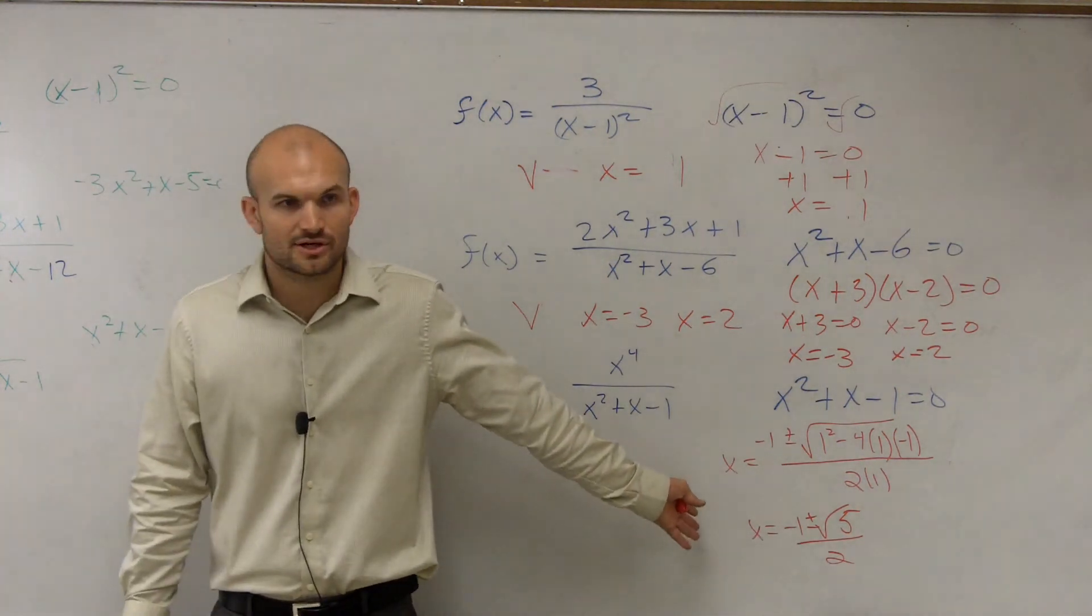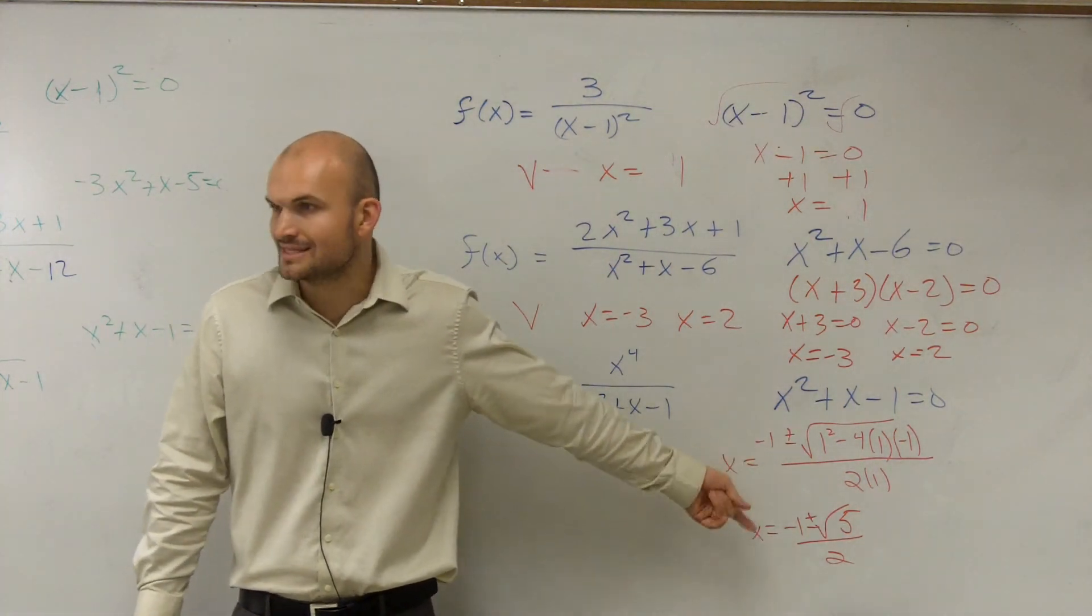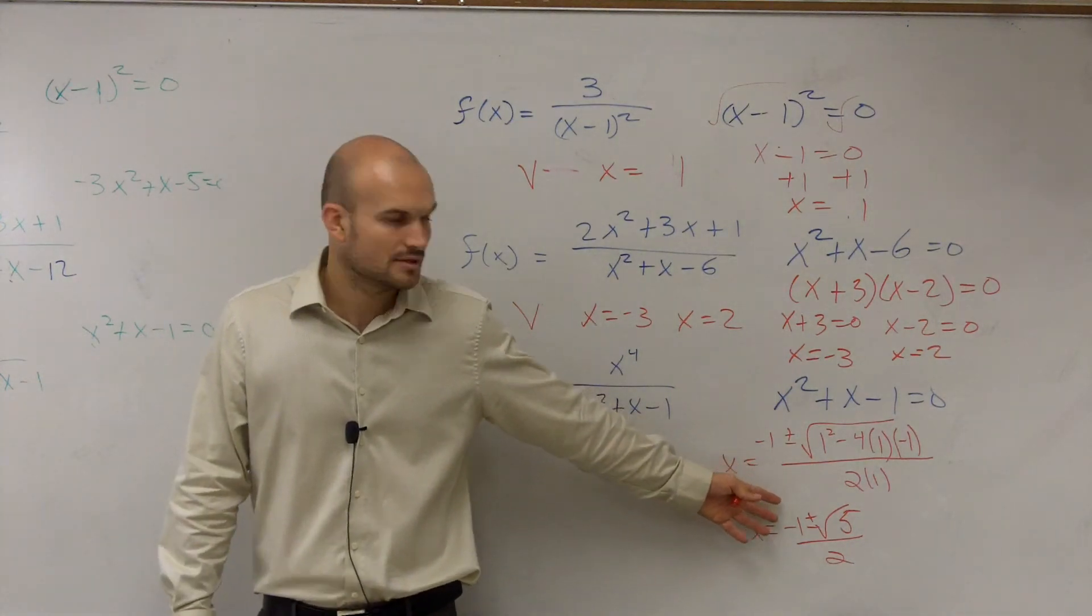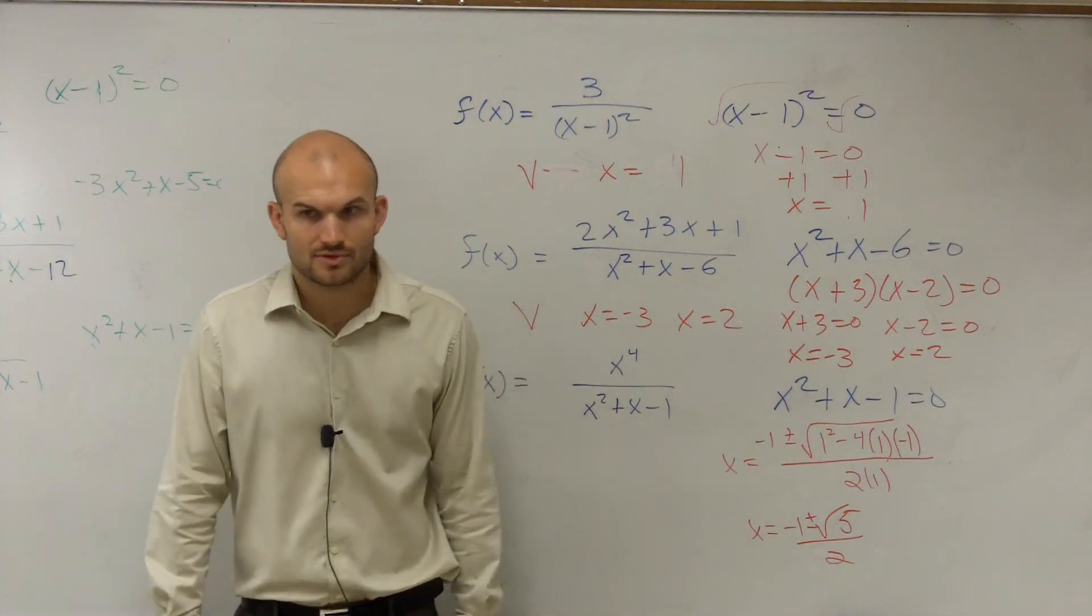So now we just don't have real numbers. They're going to be imaginary numbers. If you guys want to plug them in, you'll get a decimal for your value, an irrational decimal. But those are going to be your vertical asymptotes.